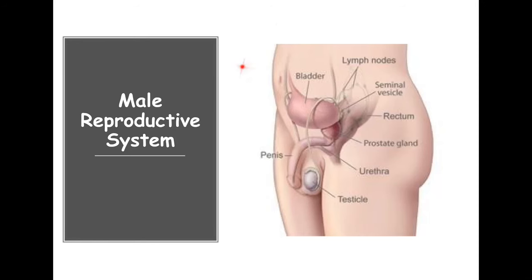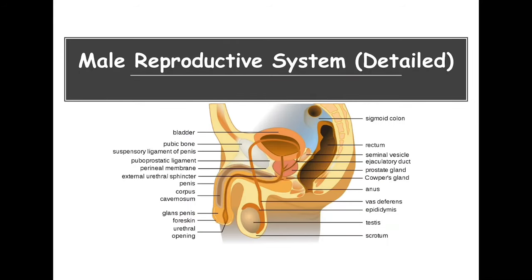Here we're looking at the general anatomy of the male reproductive system. On the outside we have the copulation organ called the penis and we have our testicles. The urethra, which is also part of the urinary system, the prostate glands, and the seminal vesicles. These are some of the structures we see, but we're going to go a little bit deeper into these structures.